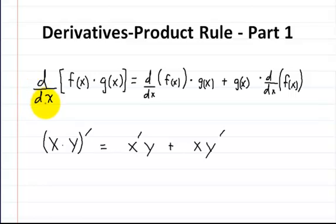What's the product rule? I wrote the product rule right here. The product rule is the derivative of f(x) times g(x), which is equal to the derivative of f(x) times g(x) plus g(x) times the derivative of f(x).